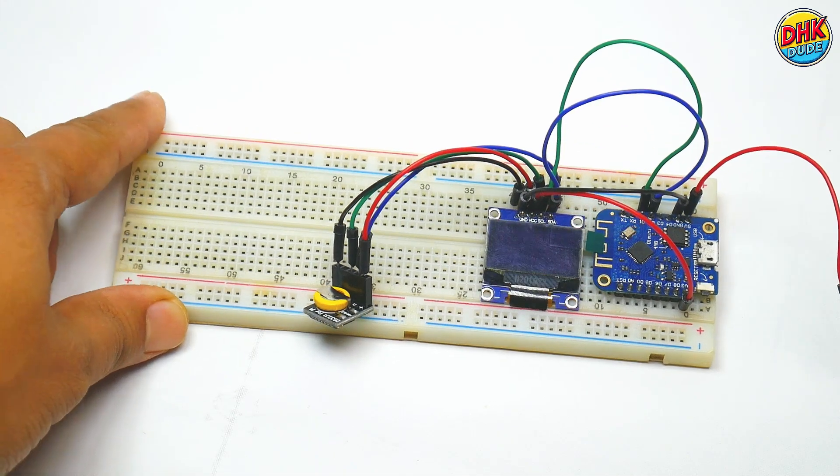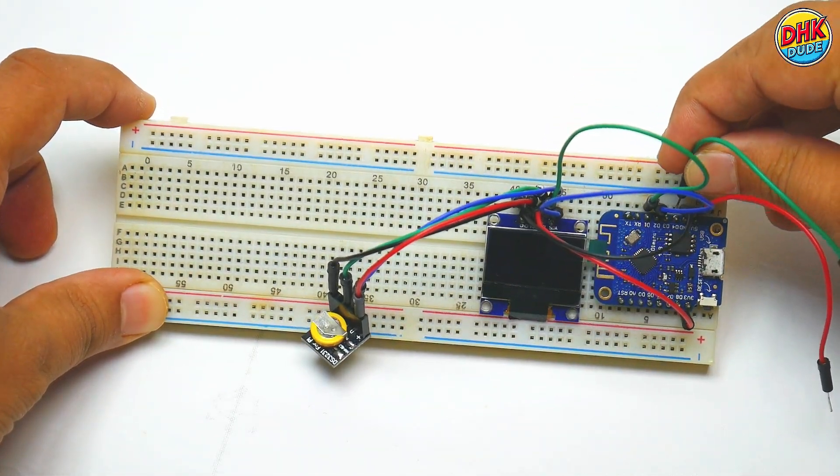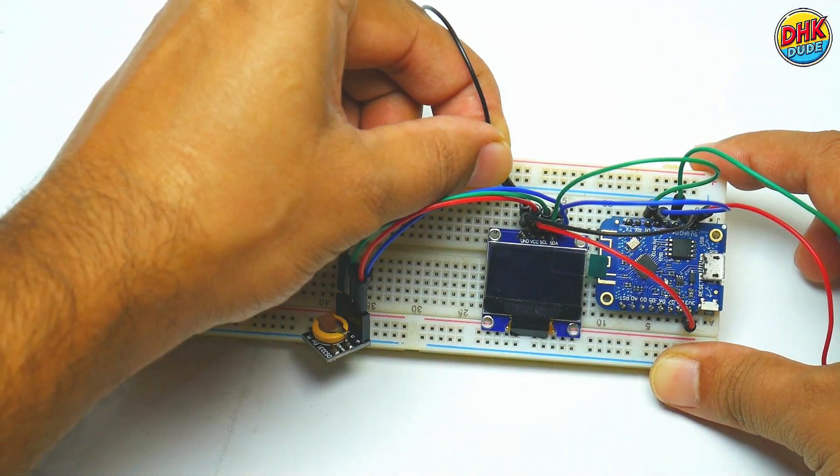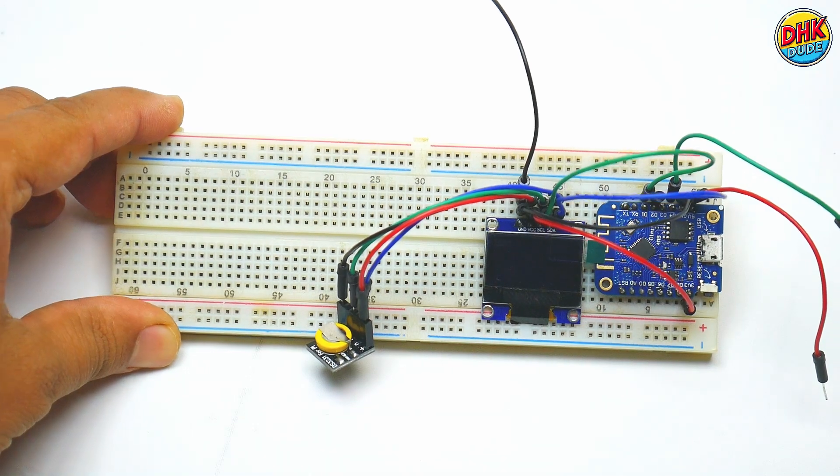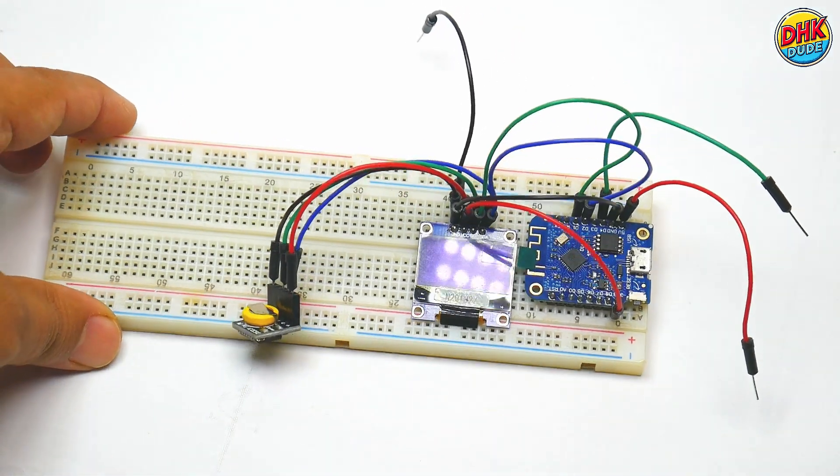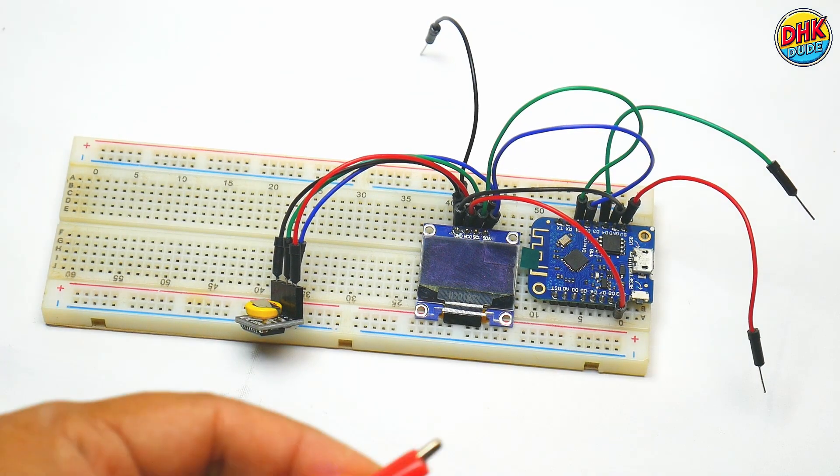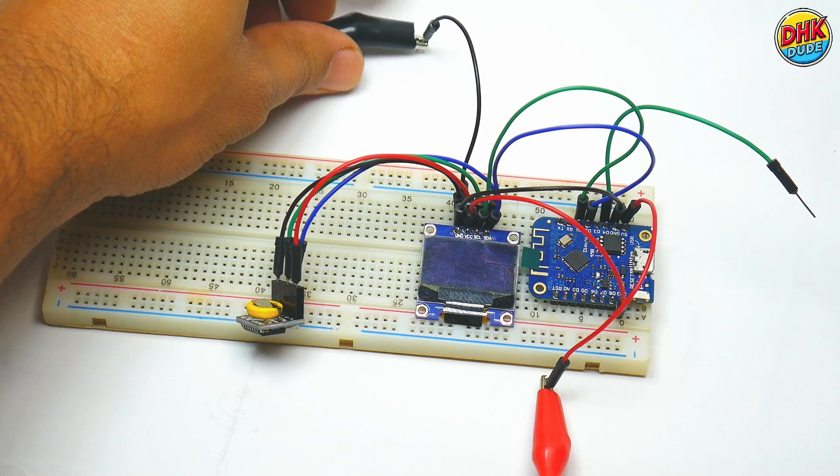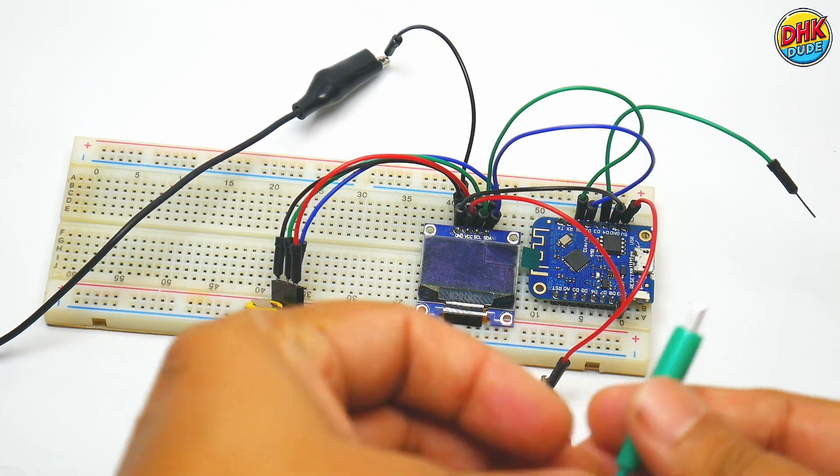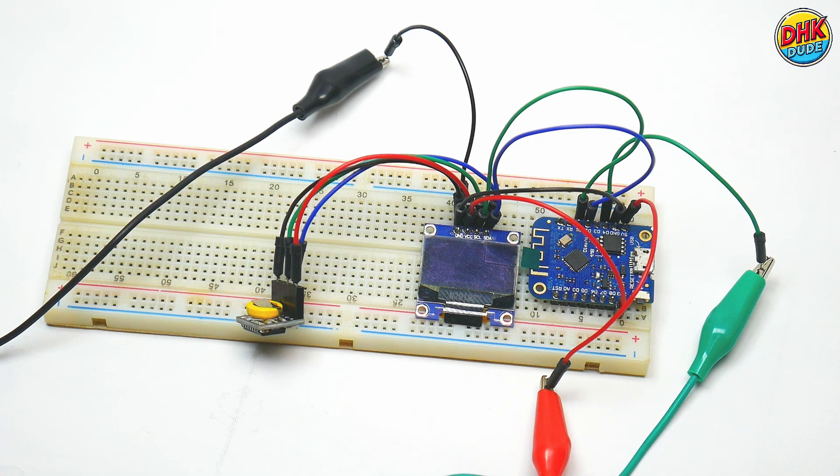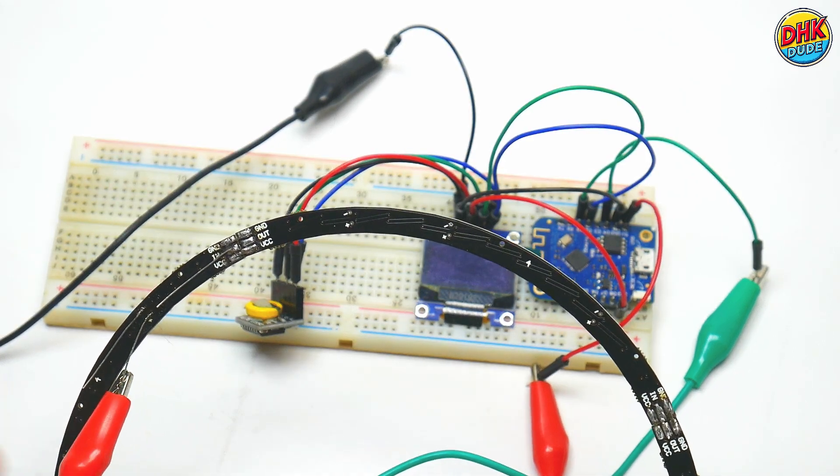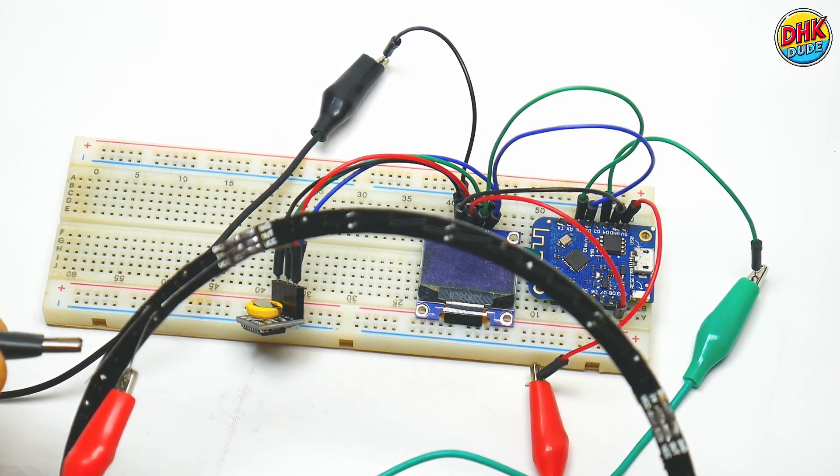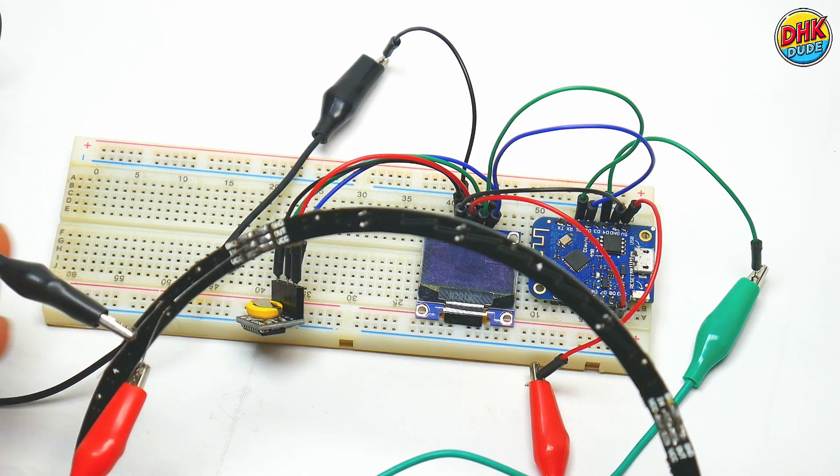Now take red jumper wire and connect one end to 5V pin of the microcontroller. Take green jumper wire and connect one end to D4 pin of the microcontroller. Take common GND from the screen. So our NeoPixel ring connections are ready. Now take red crocodile pin and connect one end to 5V pin of the microcontroller. Connect one end of the black pin to GND of the microcontroller and one end of green pin to D4 pin of the microcontroller. Now we will connect NeoPixel ring to the microcontroller. Connect red pin to VCC point of the ring, black pin to GND point of the ring and green pin to data in point of the ring. With this, all our connections are completed.